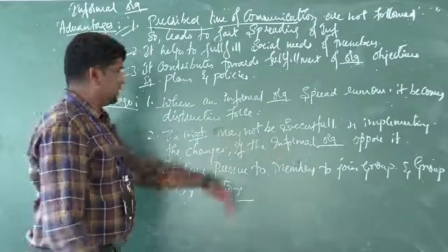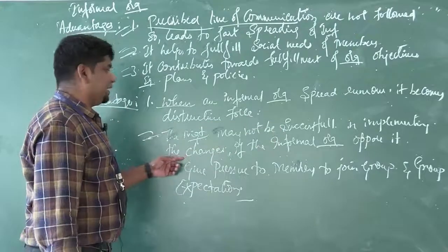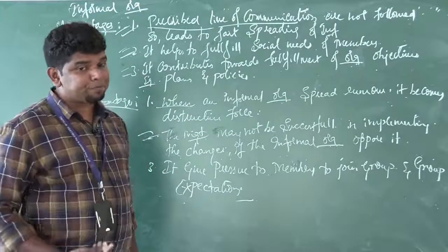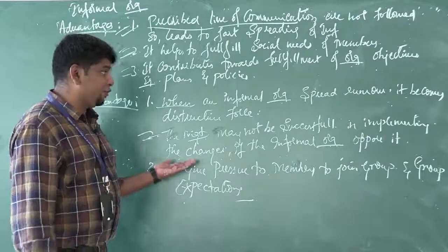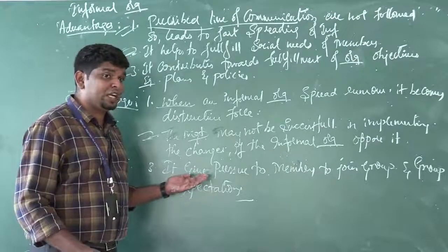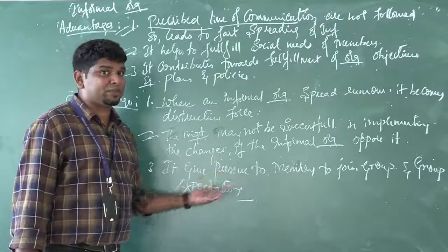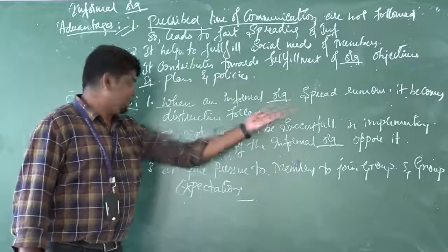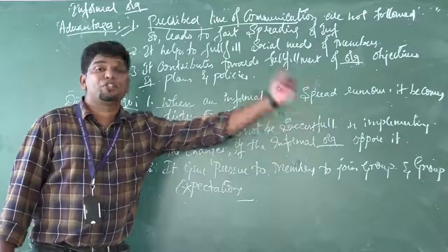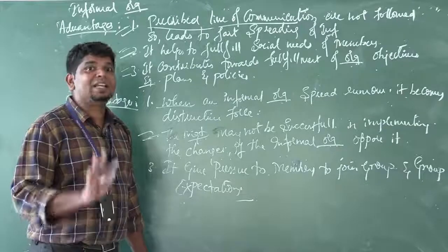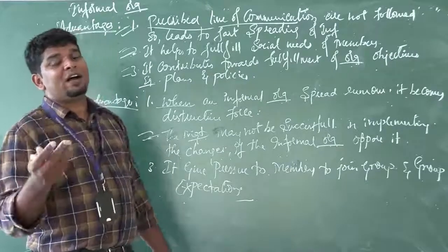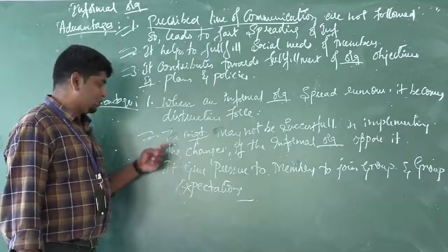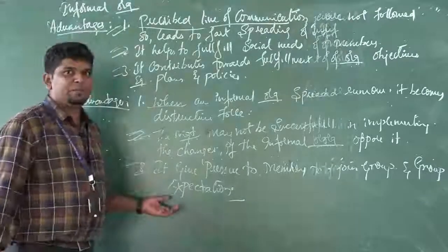Second disadvantage: the management may not be successful in implementing changes if the informal organization opposes it. If management gives some plans but the members of the informal groups oppose them, the plans will not succeed. In informal organization, what the group members say is often final — changes cannot be easily implemented by top level management in such organizations.